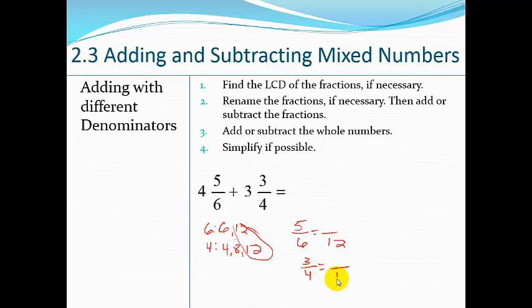5/6 needs to turn into a fraction over 12, and 3/4 needs to turn into a fraction over 12. I ask myself, 6 times what gives me 12? 6 times 2, so then 5 times 2 gives me 10/12. Then 4 times 3 is 12, and 3 times 3 gives me 9. Now add or subtract the fractions. I like to rewrite this—if you're not going to change them to improper fractions, go ahead and put your whole parts off to the side so you don't lose them, especially when you're adding.